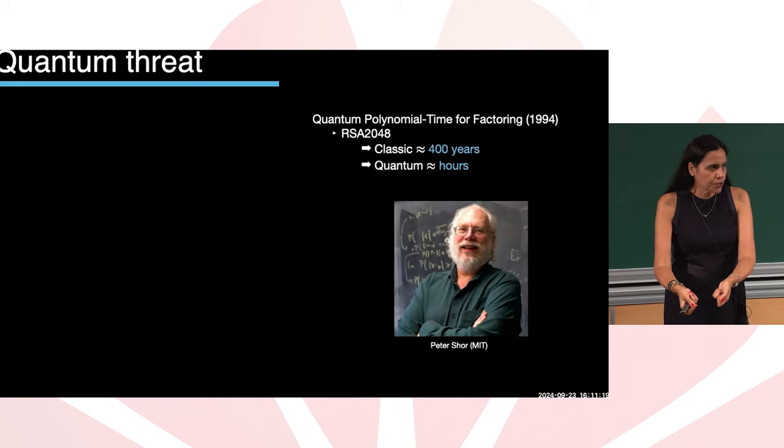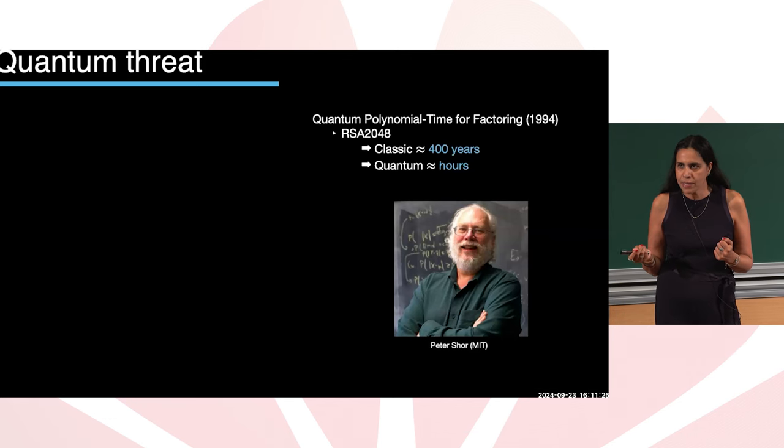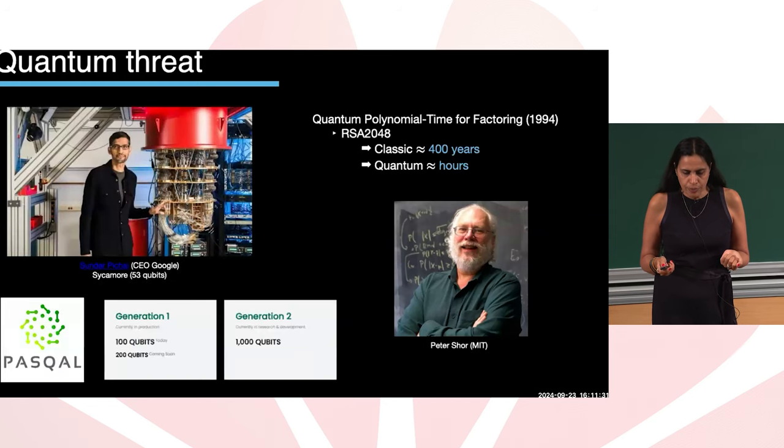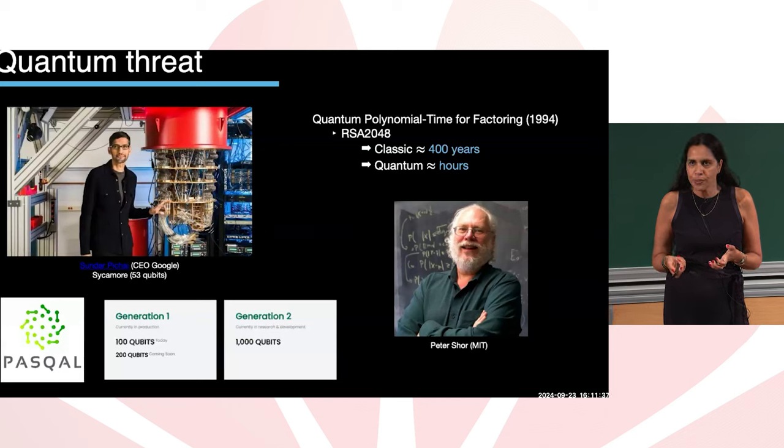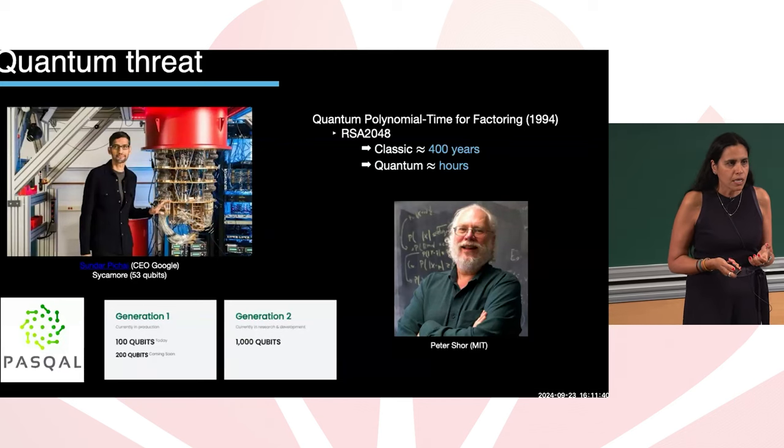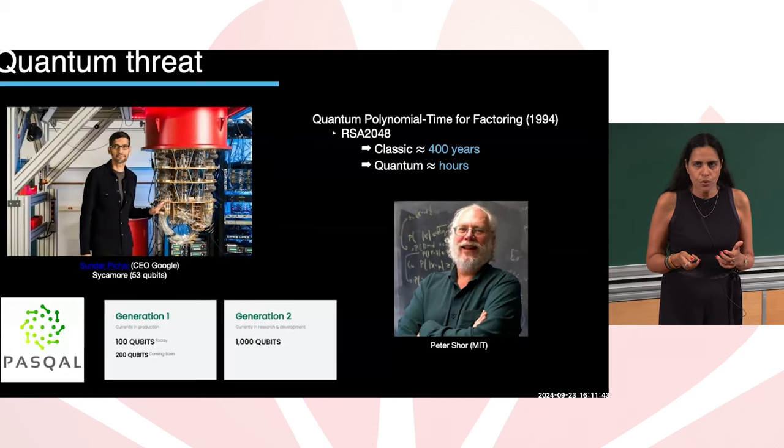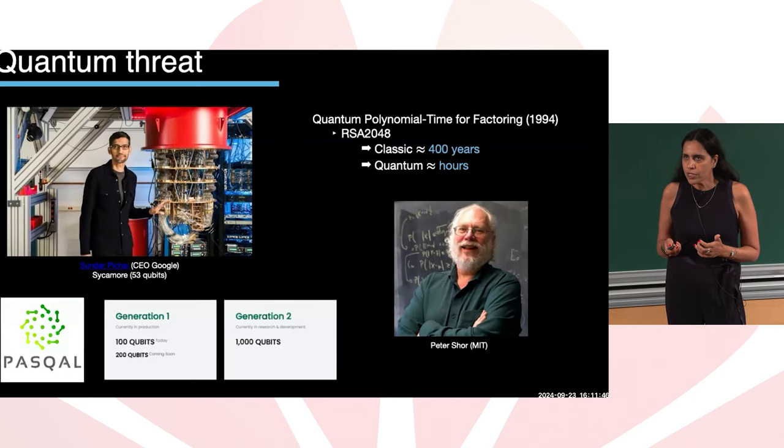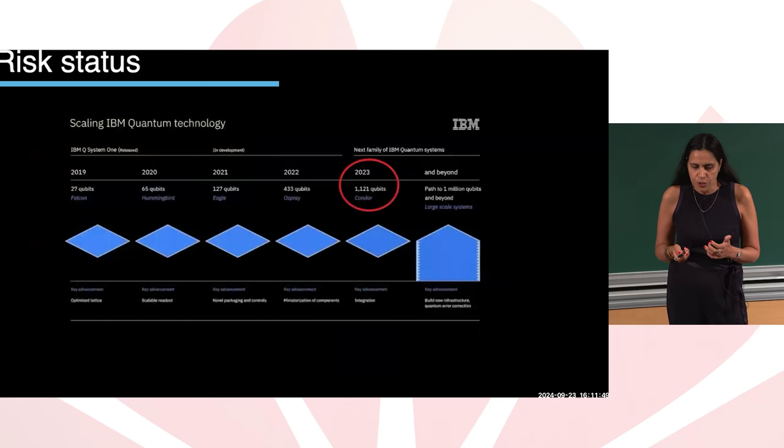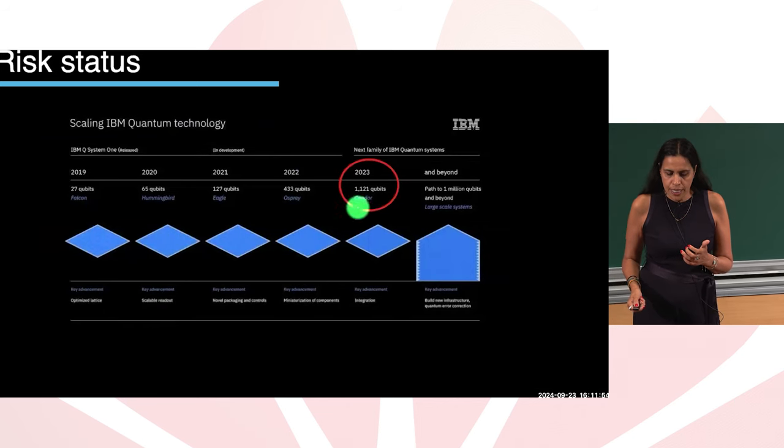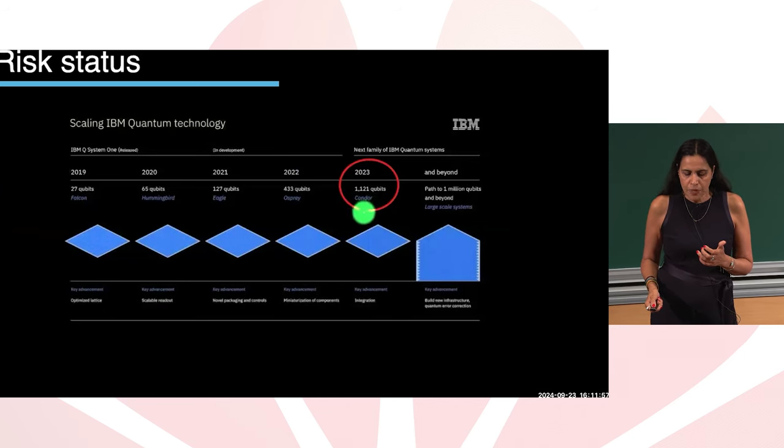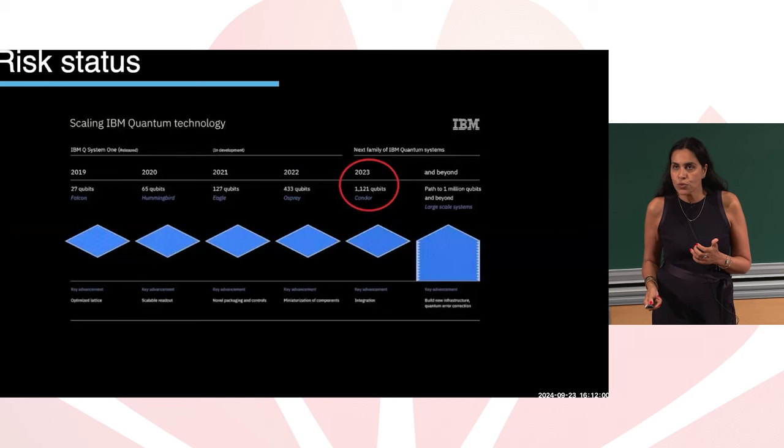Quantum polynomial time. And classically, in classical computers, breaking, say, RSA 2048 bits, it takes 400 years or so. You may say, well, in order to break this system, you need enough qubits. For example, as you could see in 2023, IBM Condor could do 1,121 qubits.